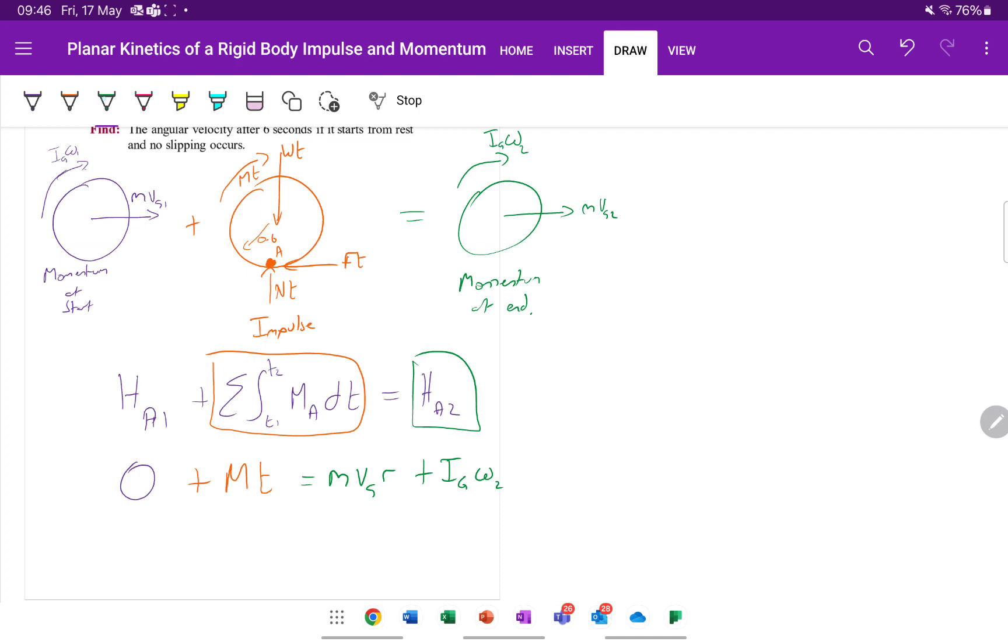So what that's saying is we've got I, G, omega, 2. So that bit is exactly the same as in our green diagram, because that's causing an angular momentum. That is an angular momentum. And then the second piece, M, V, G, 2, that would be a linear momentum. But because it's a height, a distance away, because G is the radius away, it's also got a turning effect. So there is a turning, the linear component has a turning effect. That's why it's captured within our angular momentum equation.